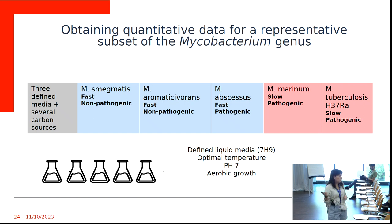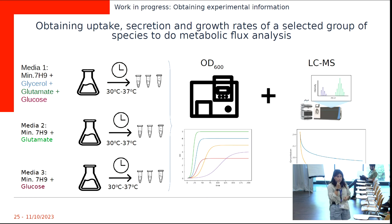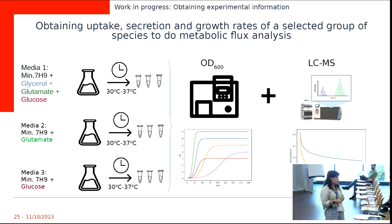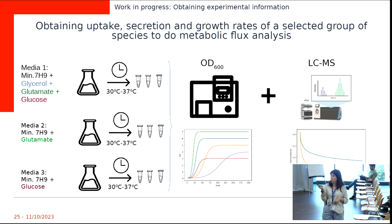We use the optimal temperature for each species — two grow at 30°C and others at 37°C — with aerobic growth in shaking flasks. We decided to grow them in 7H9 media containing glycerol, glutamate, and glucose as carbon sources. We also tested single carbon source media with glutamate and glucose. We tried glycerol too, but some species clump too much, making OD measurements unreliable even with detergent. The plan is to measure growth and metabolite uptake over time.